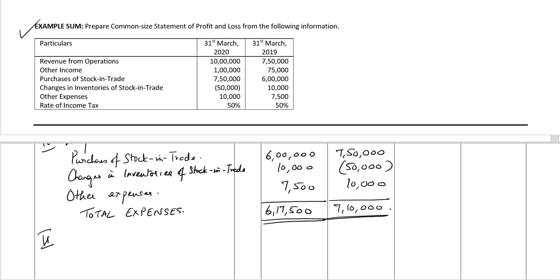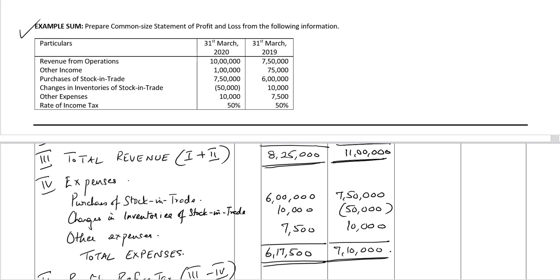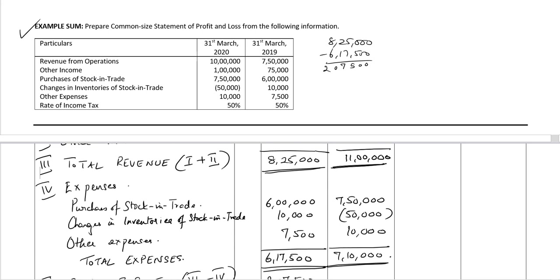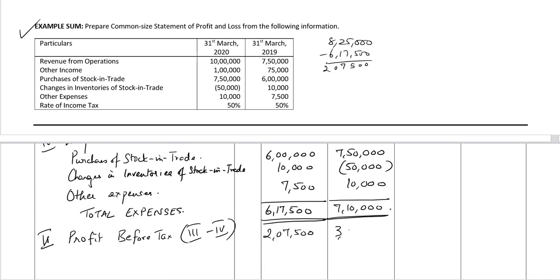Roman number V is profit before tax, which is Roman III minus Roman IV — total revenue minus total expenses. For 2019: ₹8,25,000 minus ₹6,17,500 equals ₹2,07,500. For 2020: ₹11 lakh minus ₹7,10,000 equals ₹3,90,000.